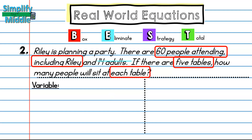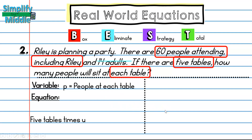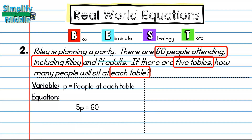Now I'm ready to strategize and solve. My variable is p, the number of people at each table — you could use x or n or any letter. My equation says five tables times an unknown number of people equals 60 people total, which I'll write as 5p = 60. To solve, I'll divide both sides by 5 and get p = 12.